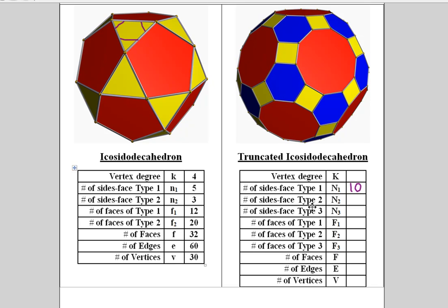And finally, the type 3 faces on the right-hand side result from cutting off the vertices. Since this is degree 4, we're going to get squares over here. So, N3 will be 4.